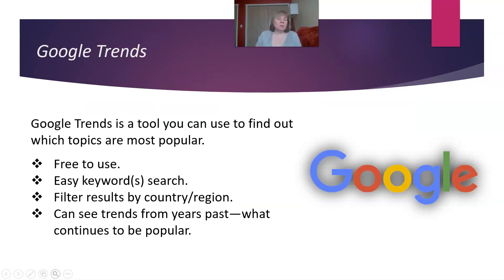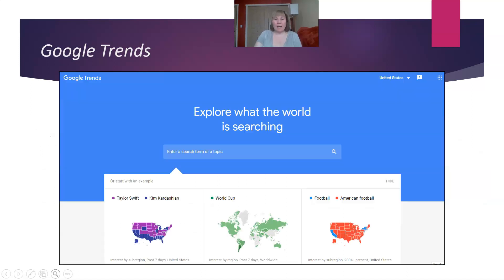Another tool you can use is Google Trends. This allows you to see what is popular and what has been popular. I like this because you can filter it not only by country or region, but also see trends from years past.